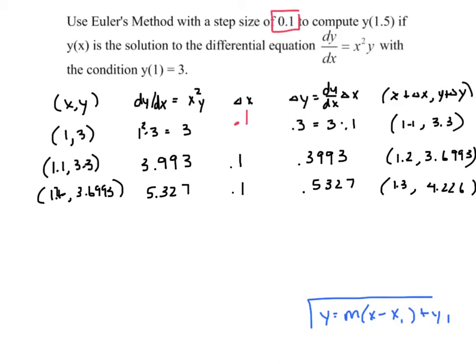And I'm only rounding 3 decimals. You certainly could go more. Oh, excuse me, 1.3. So 1.3 squared multiplied by 4.226 is 7.142. So this is 0.7142. So 1.4. And we add 4.226 plus 0.7142. And we get 4.940.